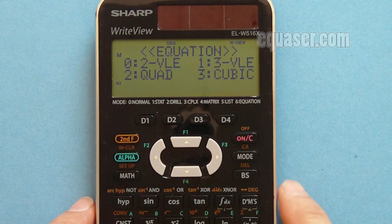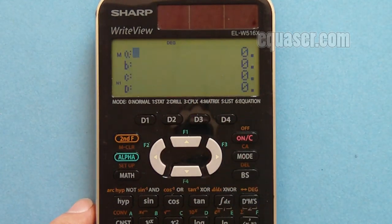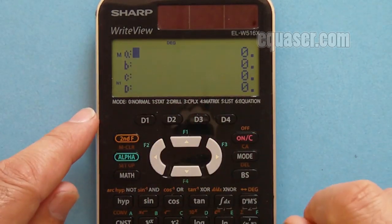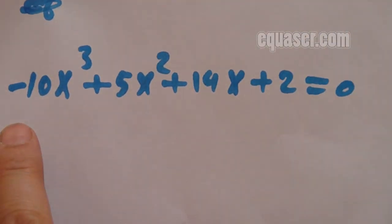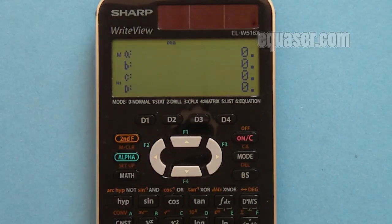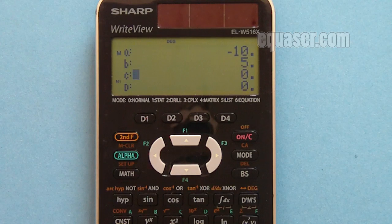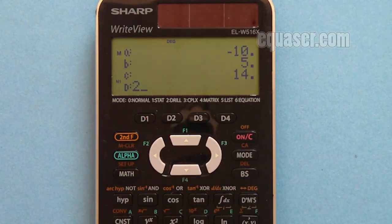For cubic, I have to press 3 to select cubic. On the screen, as you can see, it's asking for A, B, C, and D values. As I mentioned, in our equation we have these values: minus 10, 5, 14, and 2. Every time I enter the value and press equal sign.